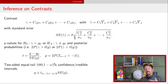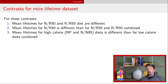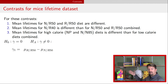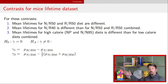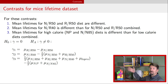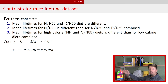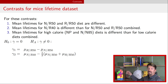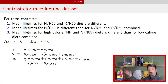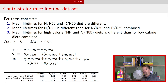So we take those contrasts and perform inference by calculating confidence intervals, credible intervals, or p-values. For the three contrasts discussed: the first compares two means with coefficients of one and negative one; the second compares one mean to the average of two, with coefficients of one, negative one-half, and negative one-half; and the third compares the average of four means to the average of two, with coefficients of one-quarter, one-quarter, one-quarter, one-quarter, and negative one-half, negative one-half. This is summarized in a coefficient table.